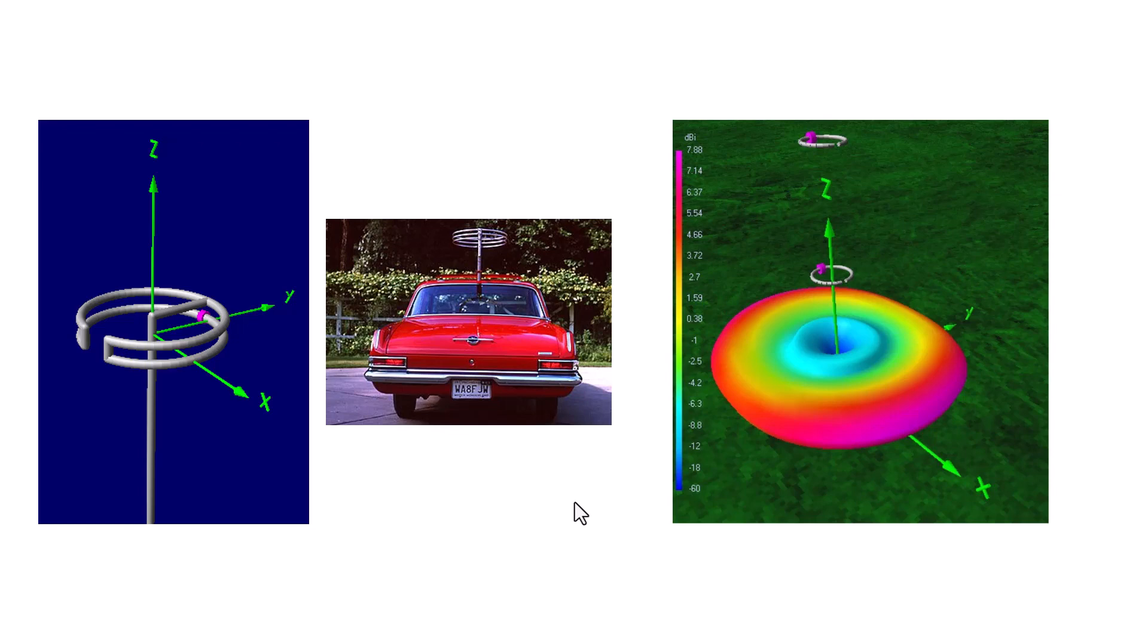The next question asks, what is an advantage of vertically stacking horizontally polarized Yagi antennas? A Yagi antenna is a good directional antenna. If you stack one Yagi antenna on top of another, maybe on top of a third, what it does is narrows the main lobe in elevation. So it's very directional. The answer is, it narrows the main lobe in elevation.